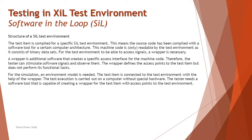Once your model is verified — that is, MIL in the previous step is successful — the next step is Software in the Loop. Here you generate code only from the controller model and replace the controller block with this code. Then you run the simulation with the controller block containing the C code, while the plant remains a software model, similar to what we worked with in MIL.